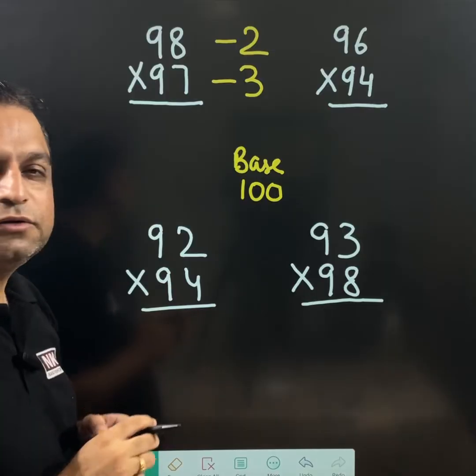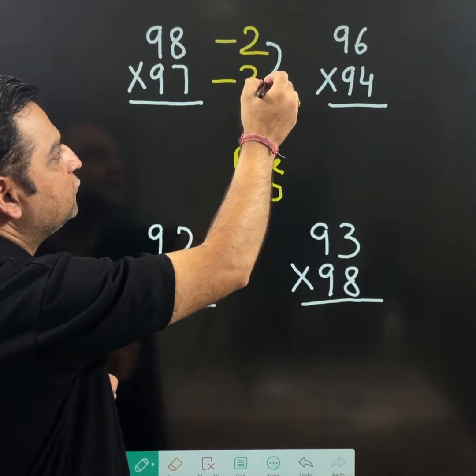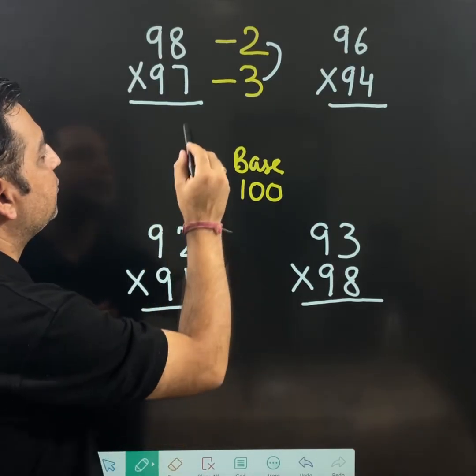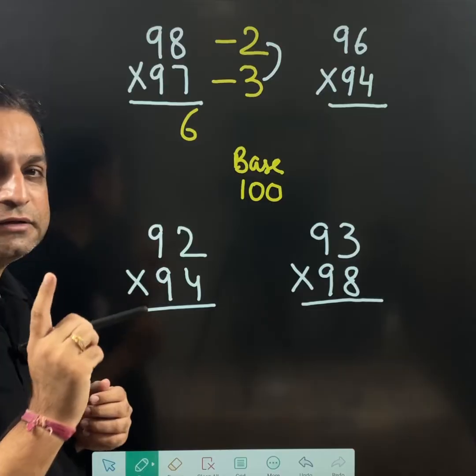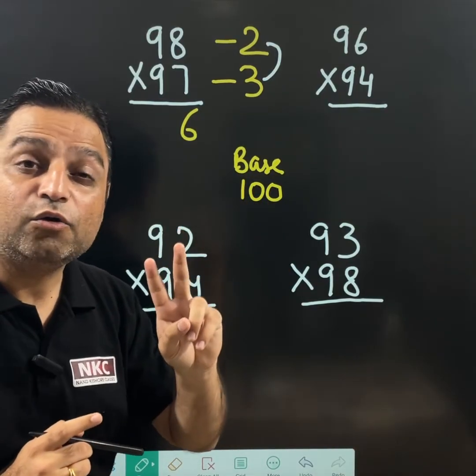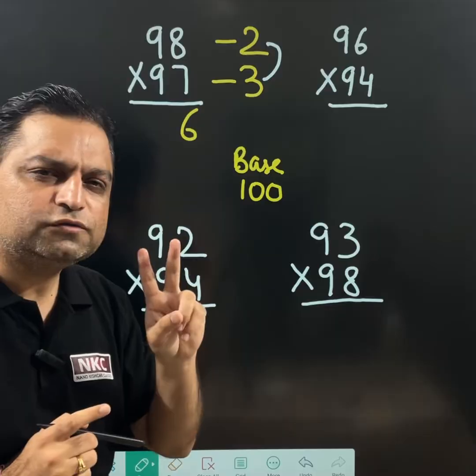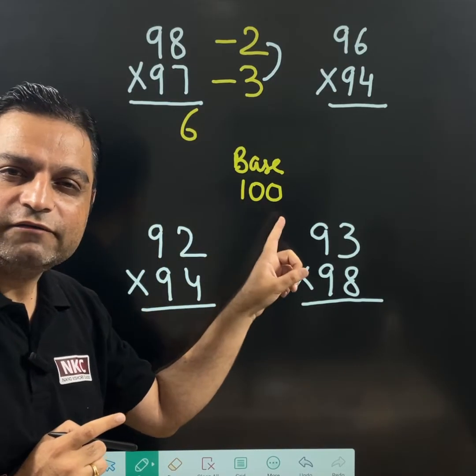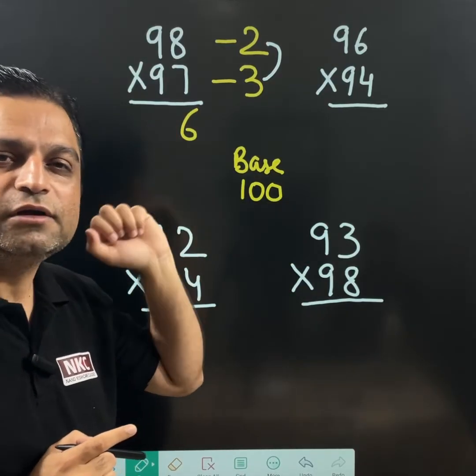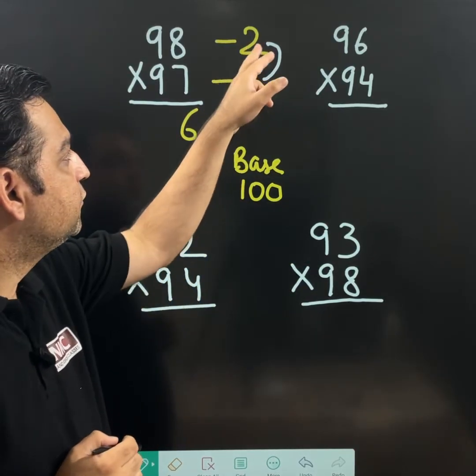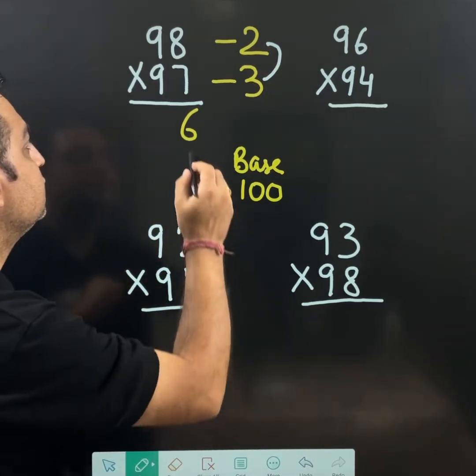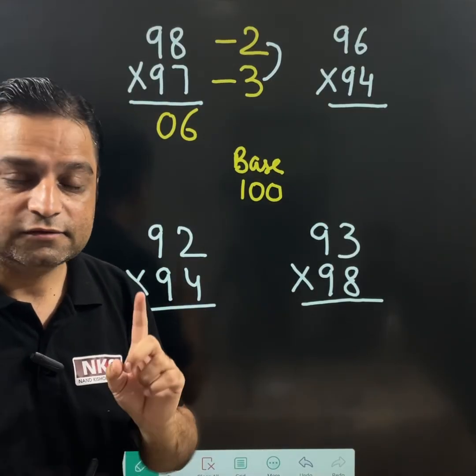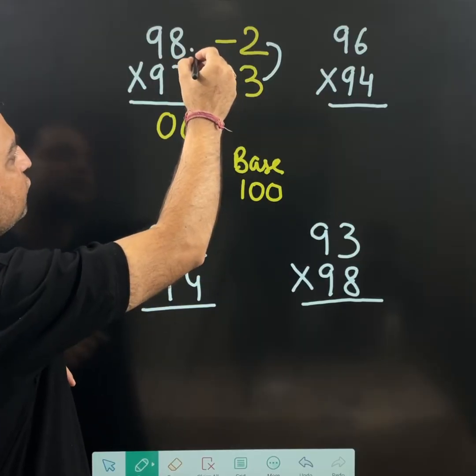Now what we need to do, just multiply these two numbers. 2 multiply 3 is 6. I am writing 6, but my base is 100 which is having how many zeros? 2 zeros are there. That means it all depends on the base. If it is having 2 zeros that means I need a 2 digit number at the end. If 3 multiplied 2 is giving me a single digit, still I need to write 2 digits. That means 0, 6 I will write.